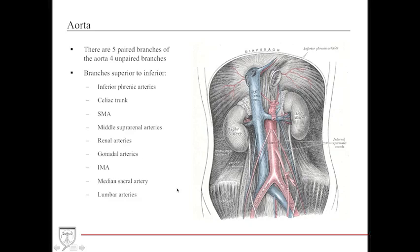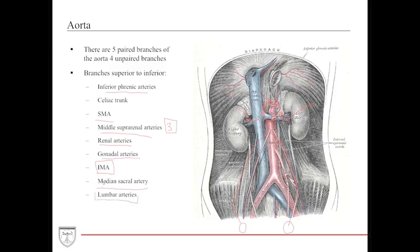The aorta has five paired branches and four unpaired branches, from superior to inferior: the inferior phrenic arteries supplying the diaphragm, the celiac trunk supplying the foregut, the superior mesenteric artery supplying the midgut, the middle suprarenal arteries supplying the adrenal glands, the renal arteries supplying the kidneys, the gonadals descending to the testicles and ovaries, the IMA supplying the hindgut, the medial sacral artery supplying the pelvic region and sacrum, and the lumbar arteries supplying the abdominal and anterior wall musculature.